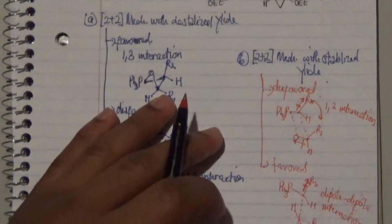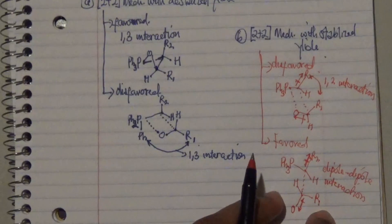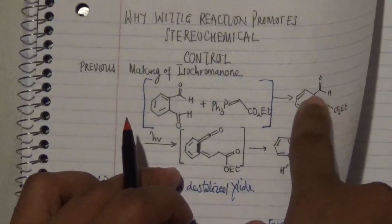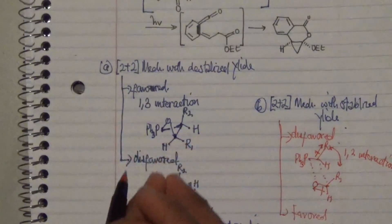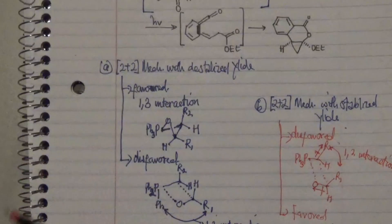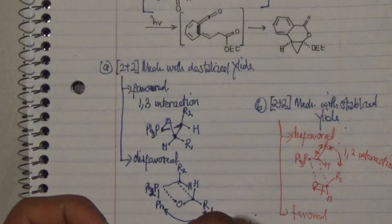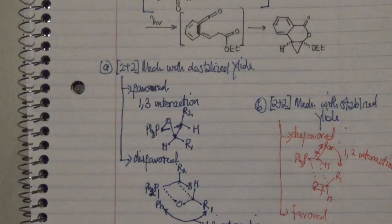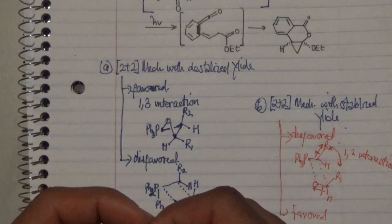Those are the two processes leading to four possibilities of intermediates that enhance the formation of this product. Due to the dipole-dipole interaction, a much more stabilized intermediate is formed, which can be either a cis or trans isomer of the product. Thanks for watching this explanation of the Wittig reaction and how it is supported by stereochemistry control. Please hit the like button, subscribe, and share. Have a good day everyone!